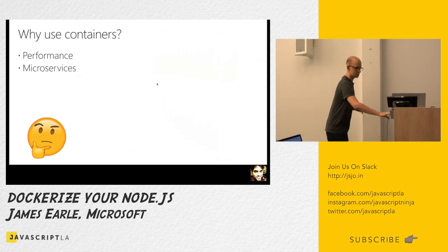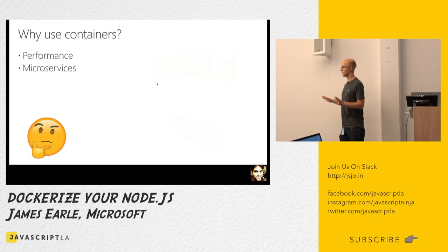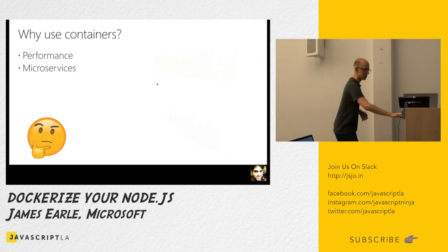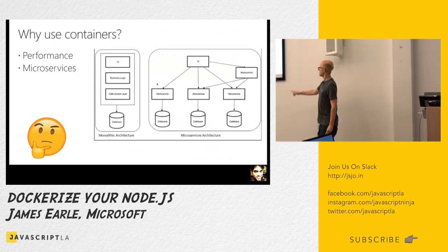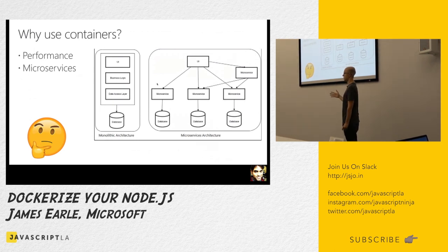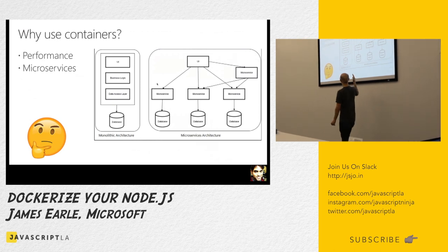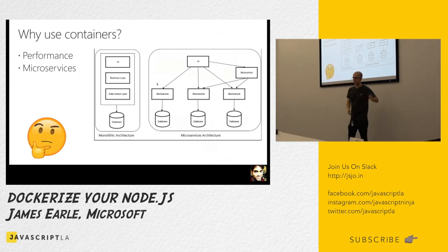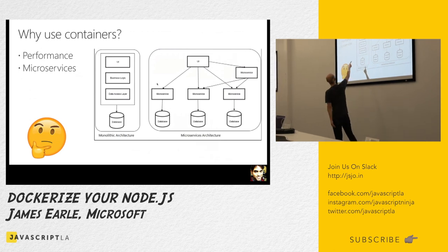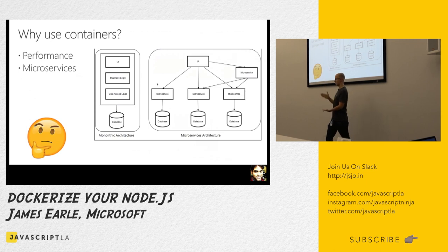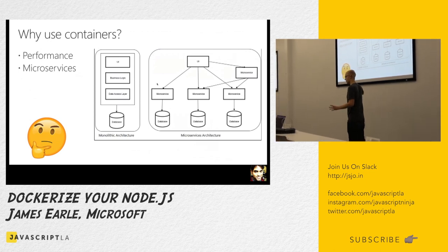Another benefit: microservices. Who's heard of microservices — another big buzzword? Looking at the left, we've got a monolithic architecture for an application. A lot of people are probably familiar with this: you've got your database, a layer of code that accesses the database, some business logic, and then it shows to your users. That is a vertical application — a big monolith. It's kind of ugly but very traditional.